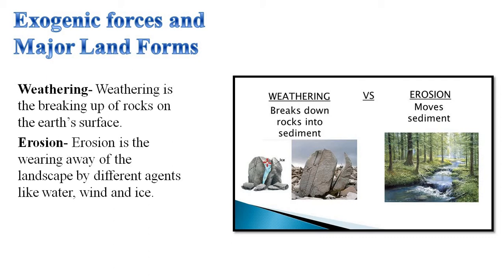Weathering is the breaking up of rocks on the earth's surface. Erosion is the wearing away of landscape by different agents like water, wind, and ice. The eroded materials are carried away through natural agents like water and wind to other places. And when the speed of these agents reduces, they deposit their load, forming different kinds of landforms. Let's see one by one which kinds of landforms are formed.